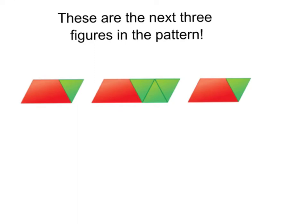Does your sketch look something similar to this? These are the next three figures in the pattern. You should have a trapezoid with one green triangle, then a red trapezoid with three green triangles, then we're back to one red trapezoid with one green triangle. If you look at it closely, each one of these designs is making a parallelogram. Let's go to the next question.